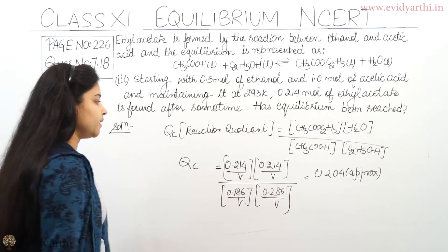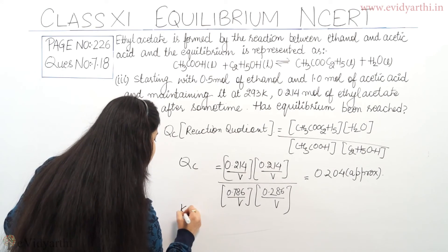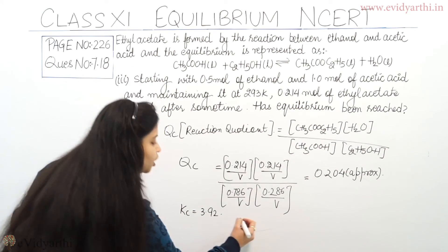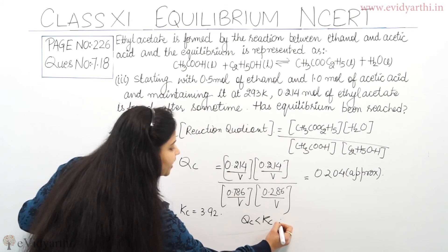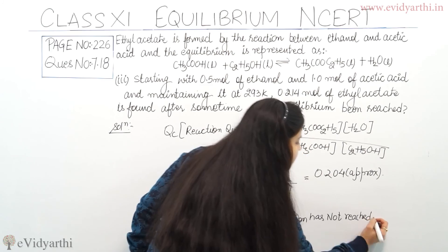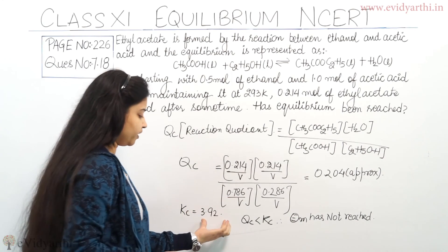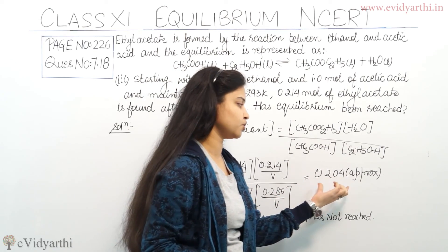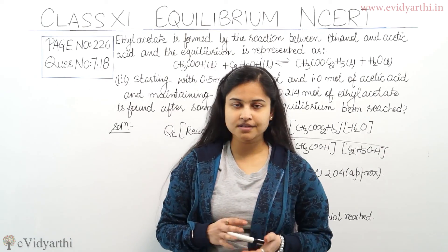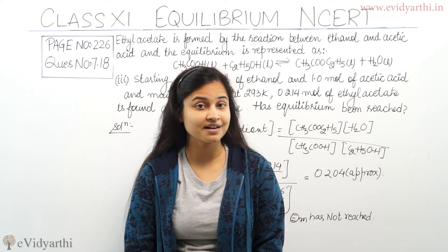Qc is approximately 0.204. From the second part, Kc is 3.92. Since Qc (0.204) is less than Kc (3.92), equilibrium has not yet been reached. The reaction is still proceeding in the forward direction. That was all about this question — all 3 parts have been discussed. If you have any doubts, please let me know in the comments below. This is Raki, goodbye!